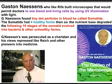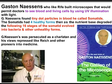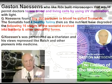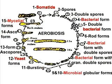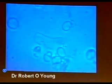Then along came Gaston Naessens, who built a Rife-type microscope that would permit doctors to see blood living cells illuminated by UV light. The tiny dot-like particles in the blood he called somatids. These somatids had four stages that had healthy forms, and then as the food or nutrient base degraded, the following 16 stages of somatid devolved into bacteria and unhealthy life forms such as yeasts and fungi.